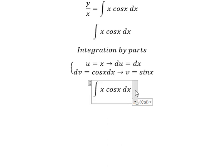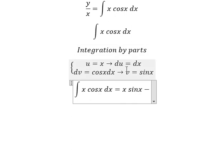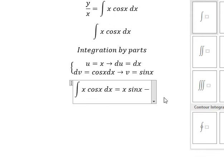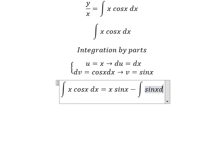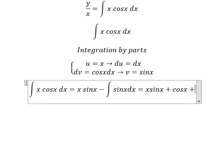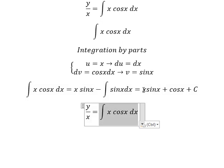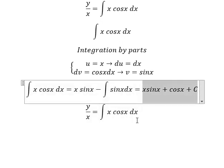So we have u multiplied by v, minus the integral of du multiplied by v. This gives us x times sine x, minus the integral of sine x dx, which equals x sine x plus cosine x, plus the constant C.